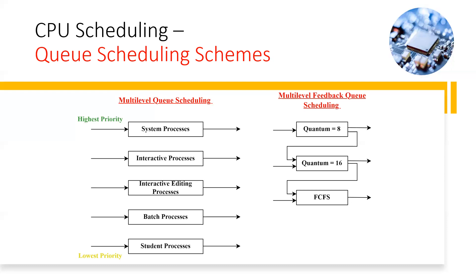For example, an ATM machine — we give user input and machine gives output, so we can say those are interactive processes. Interactive editing processes are also possible, then batch processes, student processes, and some other processes as well.